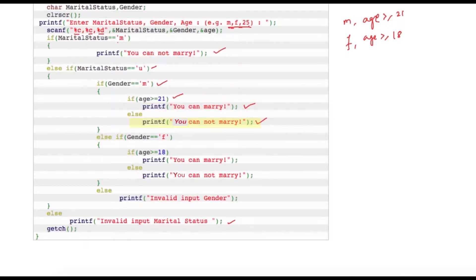Similarly for females, we can check if gender is F, which is female. Then we can check the age criteria for females, which is 18. So if age is greater than 18, we can display output as 'you can marry,' else she cannot. Now for invalid gender, if user has not entered either M or F, that means he has entered some wrong character.